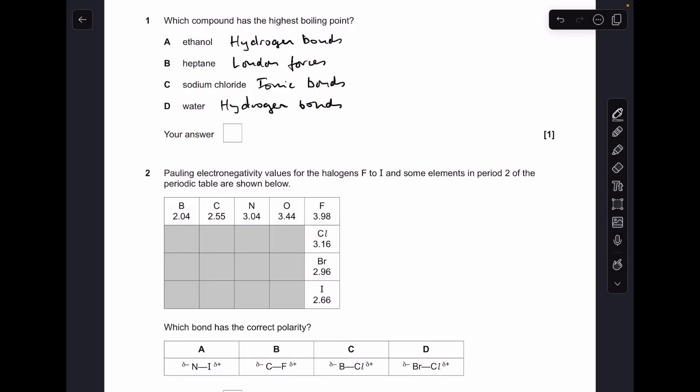Okay, so let's make a start. For question one, we need to have an awareness of the type of forces we've got to break to boil these substances. In ethanol you're breaking hydrogen bonds, heptane it's London forces, sodium chloride it's ionic bonds, and water hydrogen bonds. The strongest out of all of those are the ionic bonds, so sodium chloride will have the highest boiling point, so C.